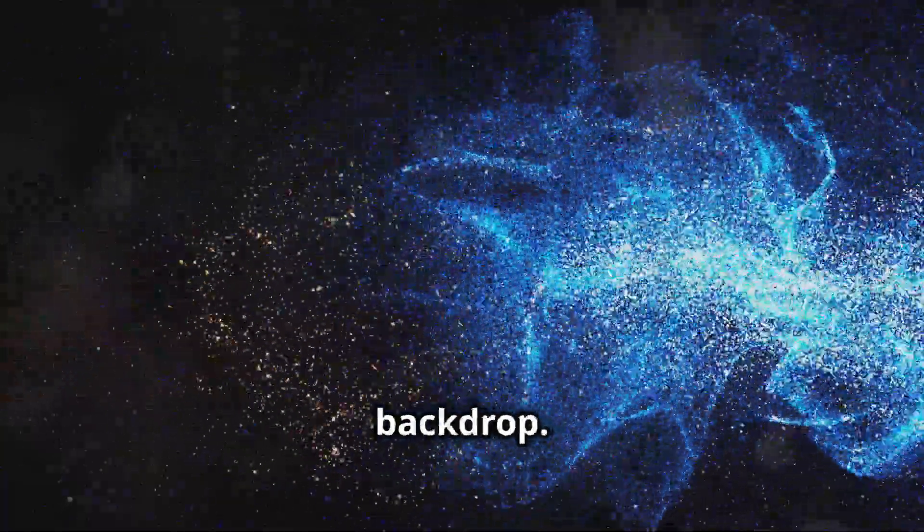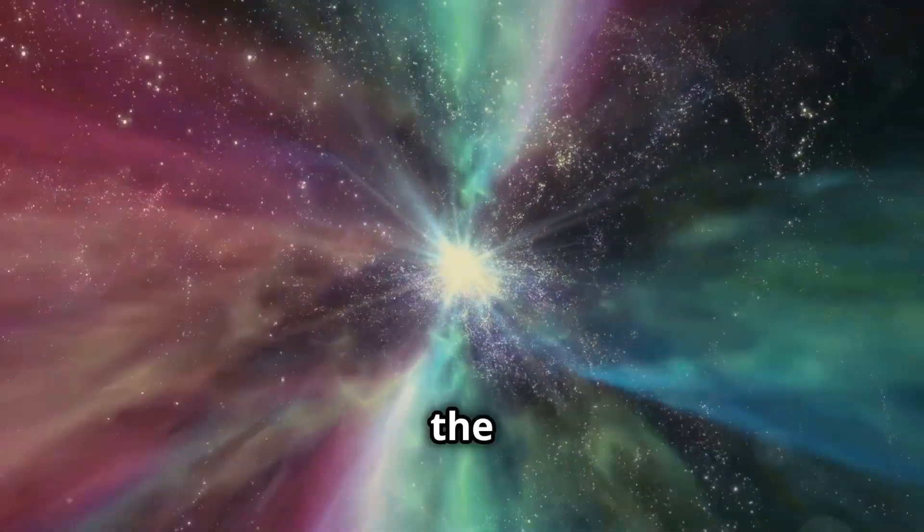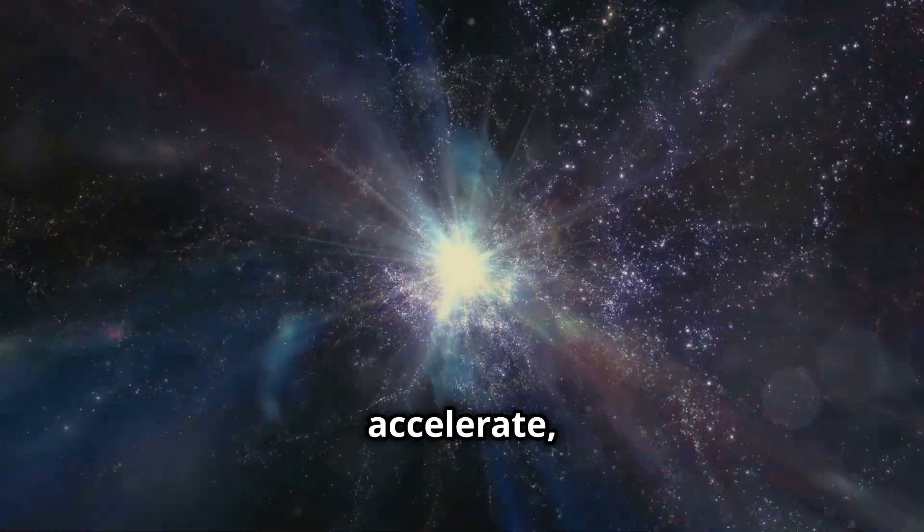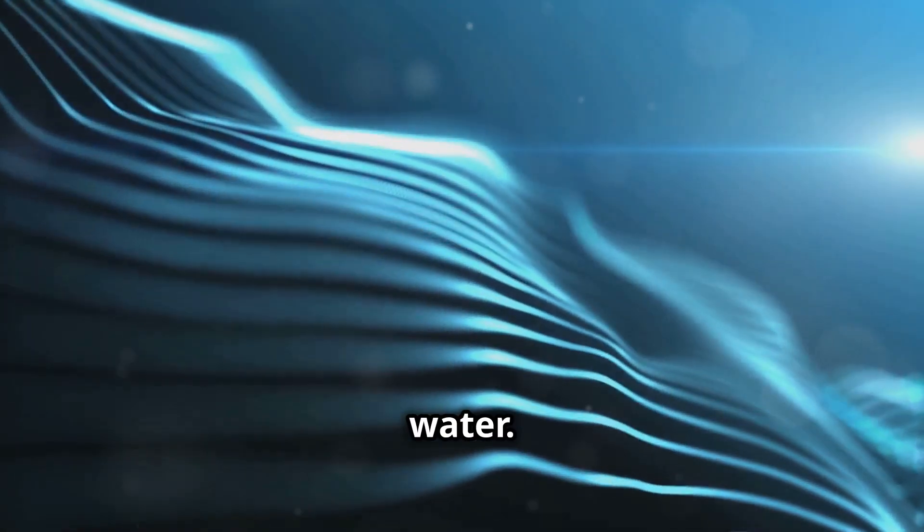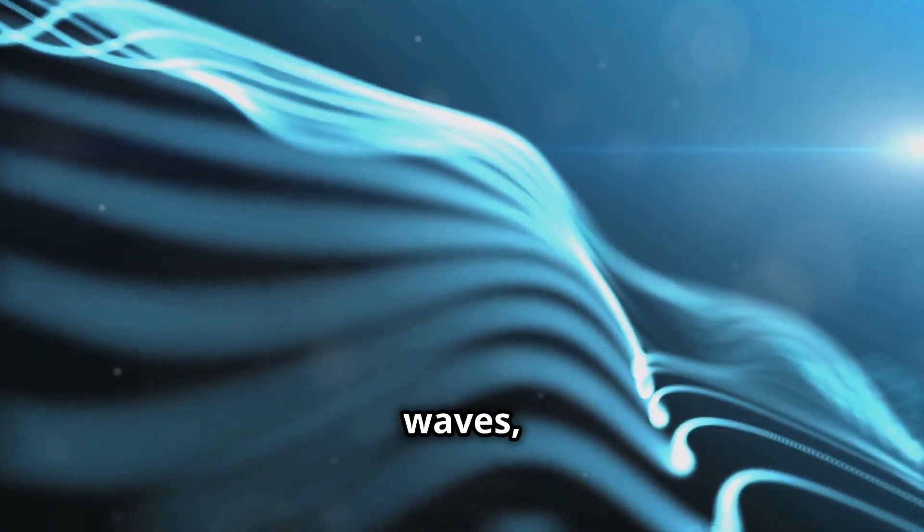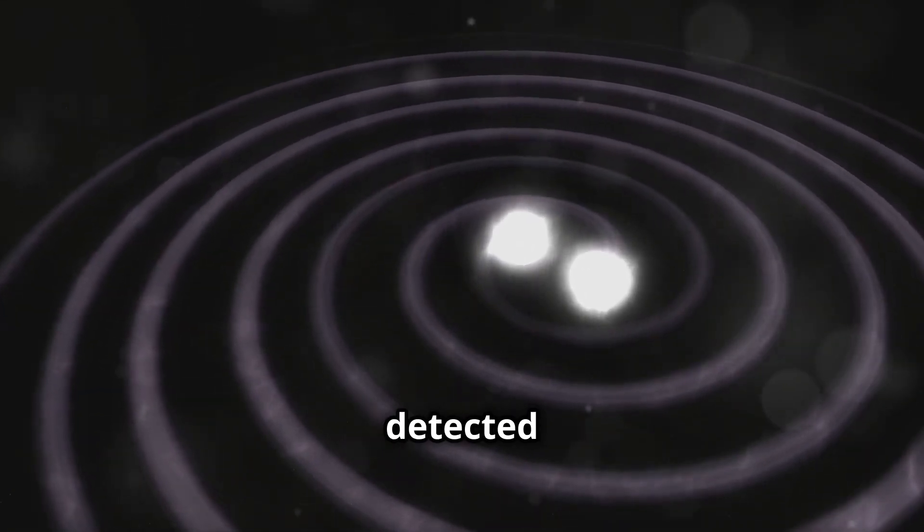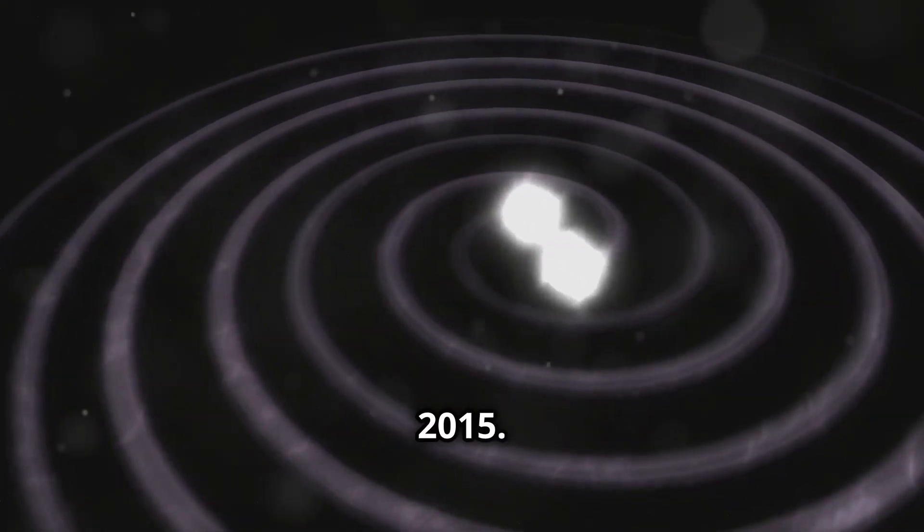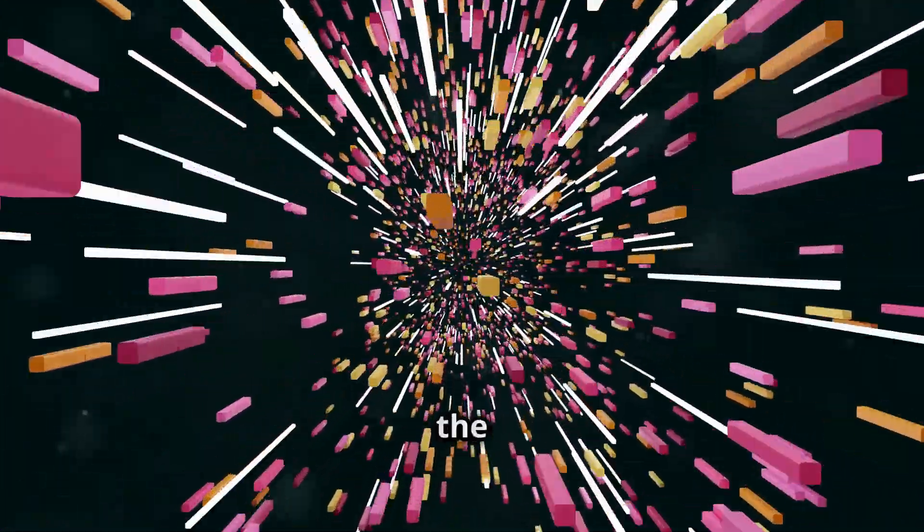But space-time is not just a static backdrop. It's dynamic, constantly being warped and twisted by the objects within it. As objects move and accelerate, they create ripples in space-time, much like a boat moving through water. These ripples, known as gravitational waves, were first predicted by Einstein's theory of general relativity and were directly detected for the first time in 2015. This groundbreaking discovery confirmed a major prediction of Einstein's theory and opened a new window into the universe, allowing us to study some of the most violent and energetic events in the cosmos.